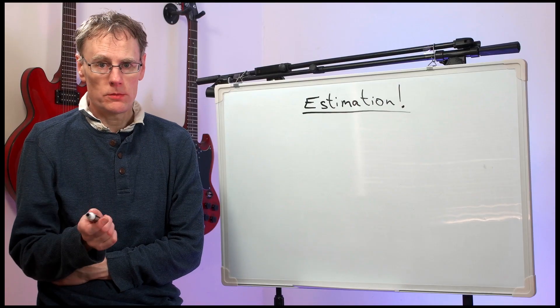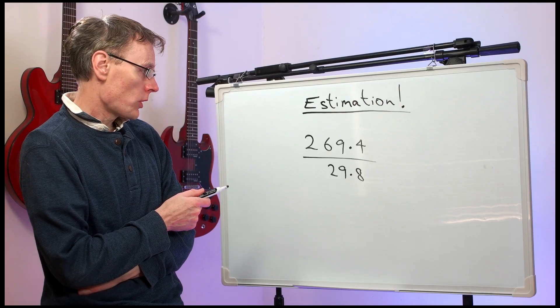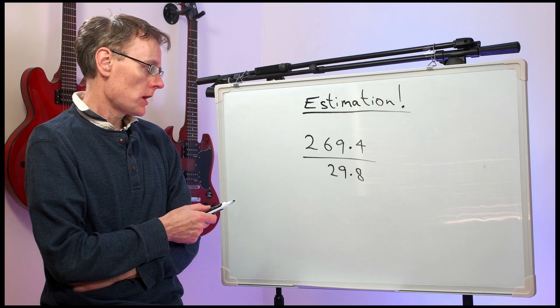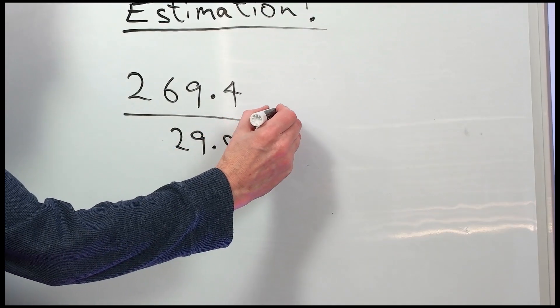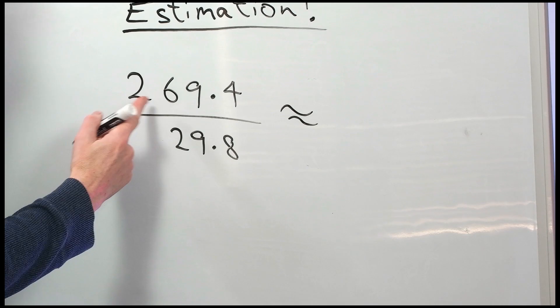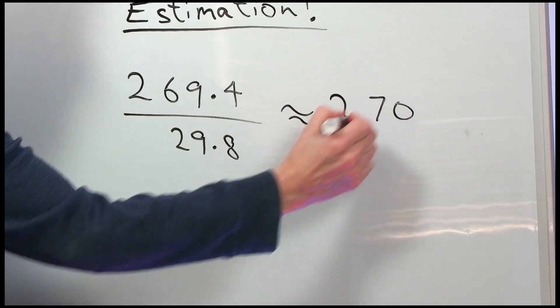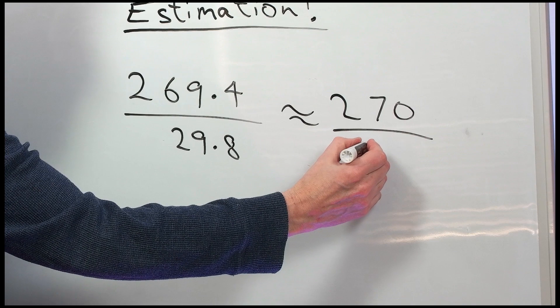How about division? 269.4 divided by 29.8. Well, we can say that's approximately, well that's about 270 divided by 30.